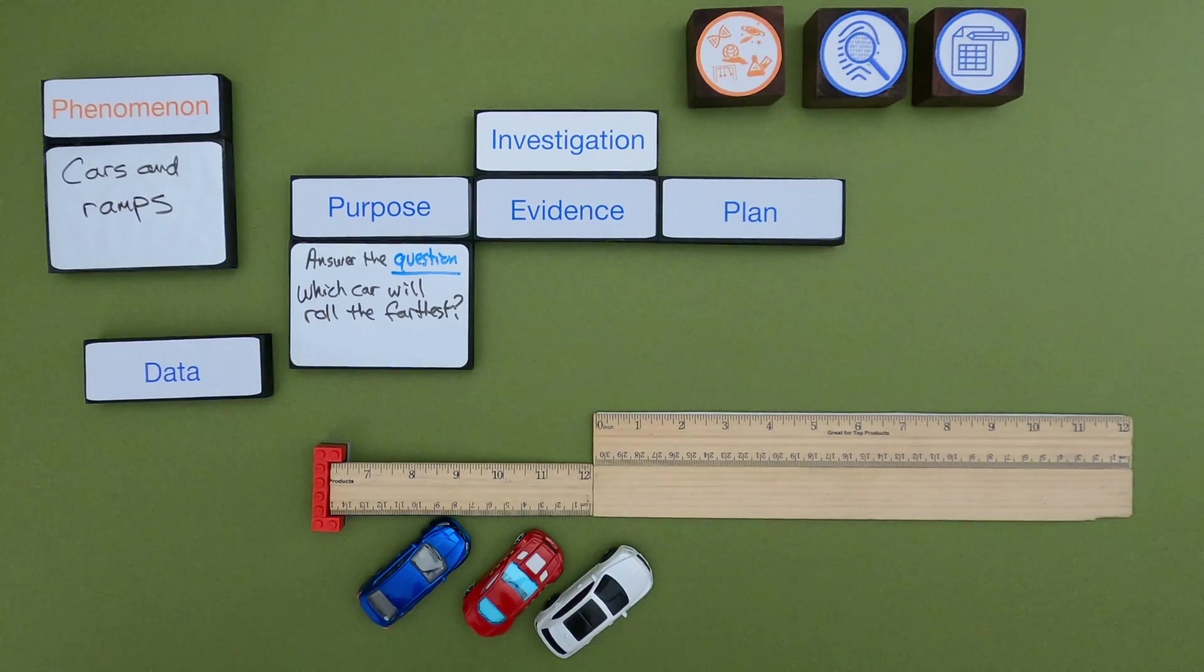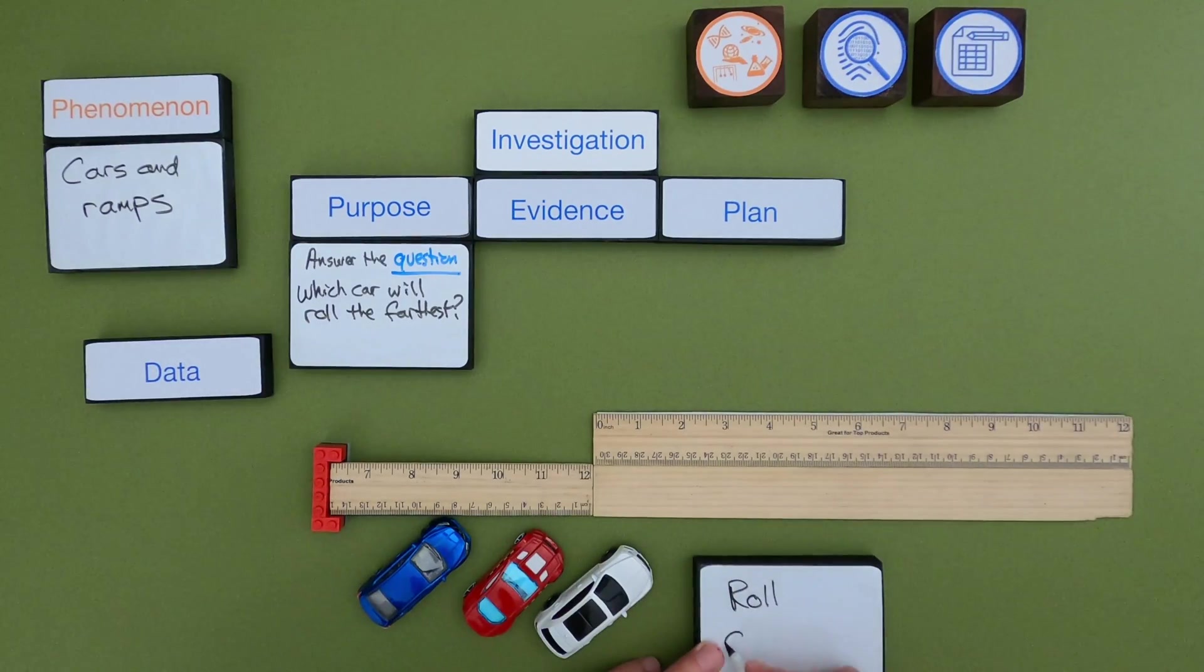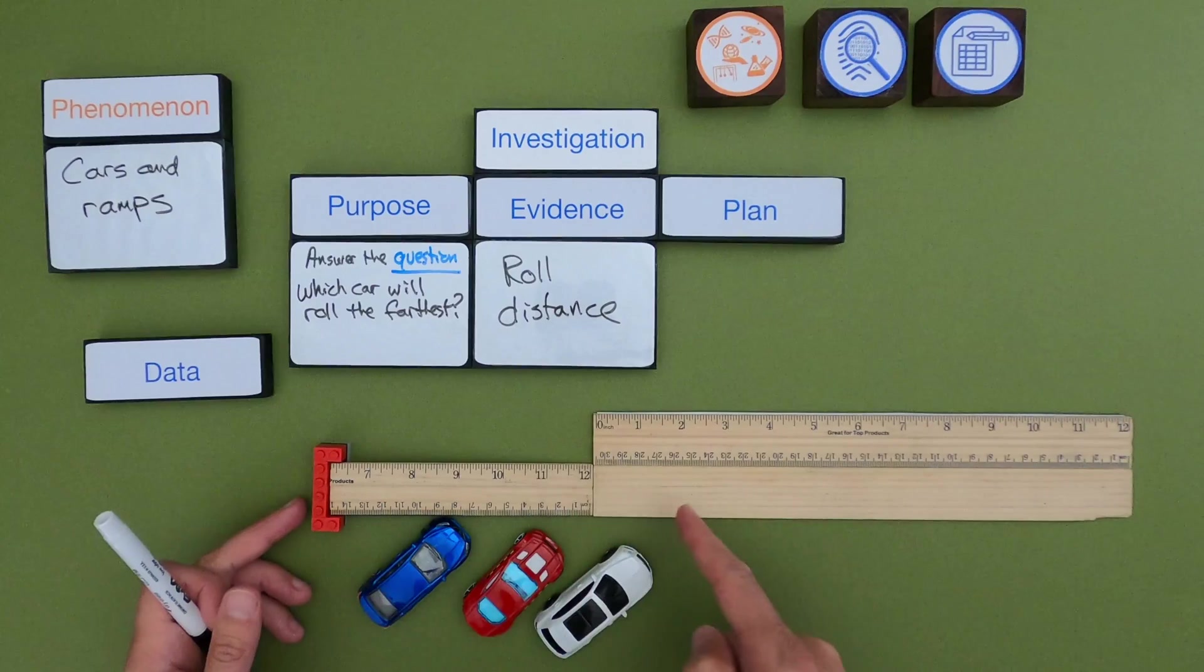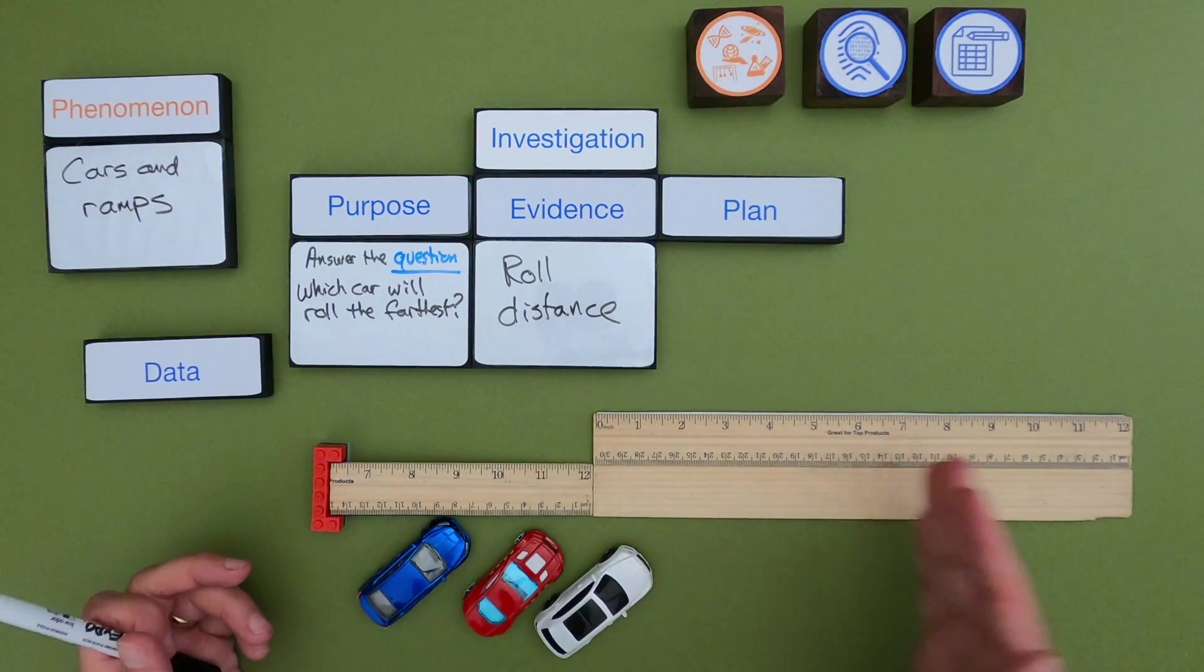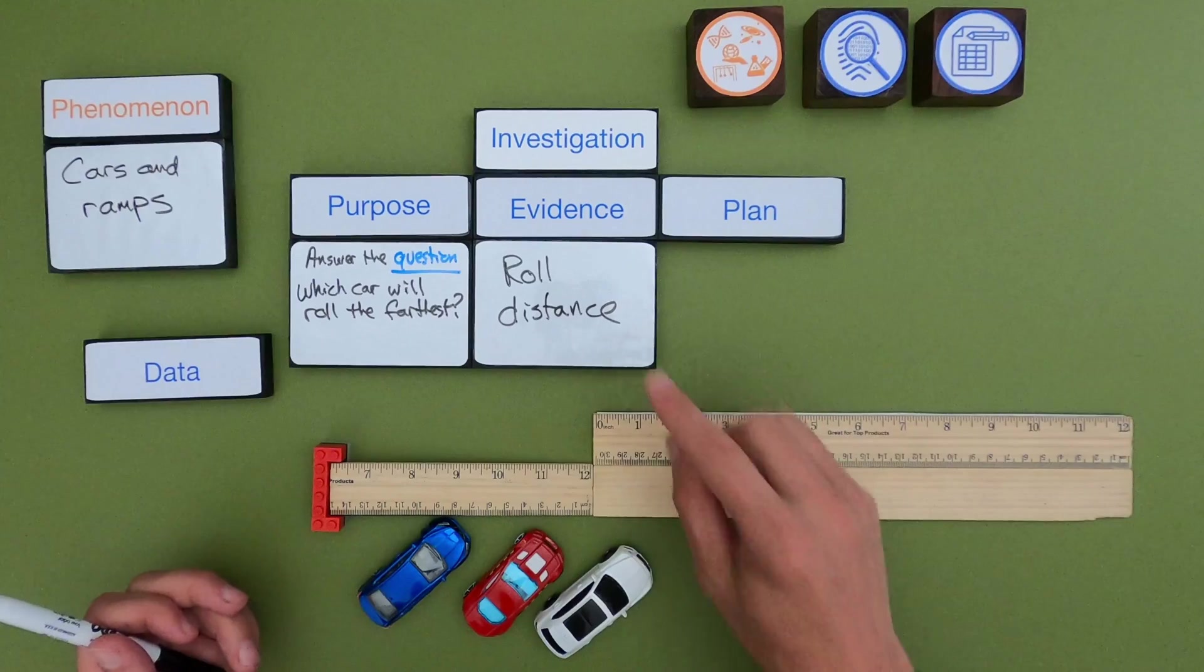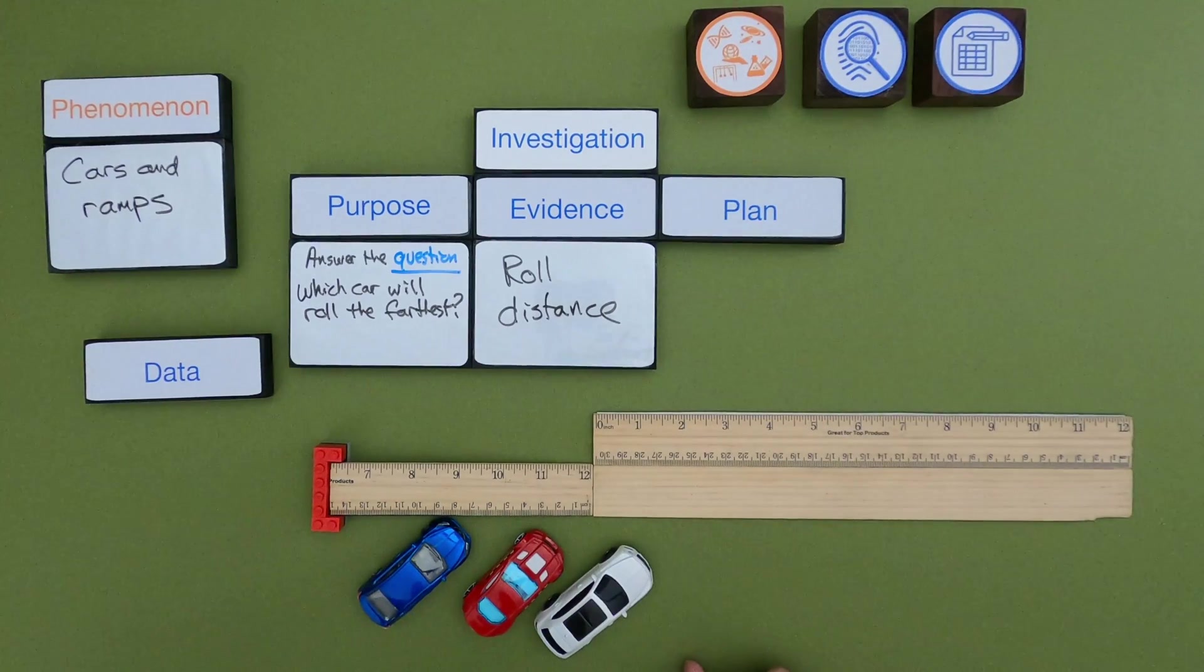Next thing I have to figure out is what data am I going to gather? So I'm gonna roll them down the ramp. So what I'm thinking is how far they roll or their roll distance is the evidence that I'm going to gather. And now the next step is I have to figure out a plan. I want somebody else to be able to follow this plan so I'm going to have to write the plan.